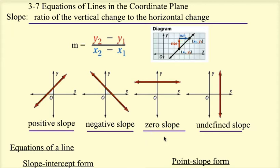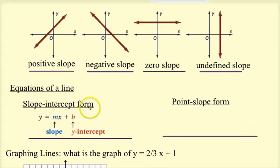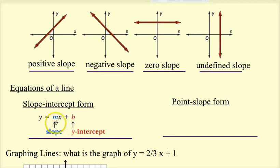Now we're going to use slope to write equations of lines. There are two different formulas to remember. The first is the slope-intercept form. If you're given a slope and a y-intercept, you use slope-intercept form: y = mx + b. You need the slope (m) and the y-intercept (b), and all you do is plug them in.